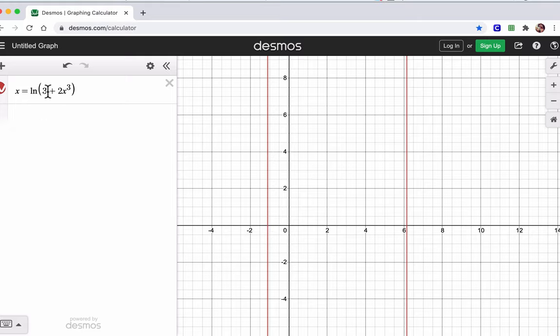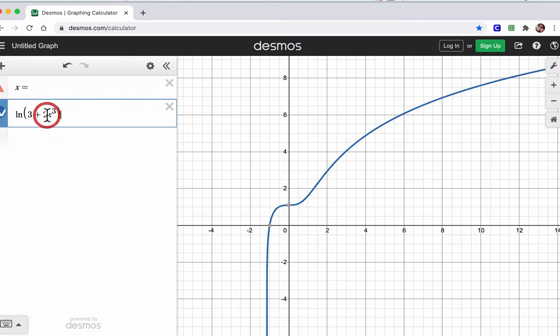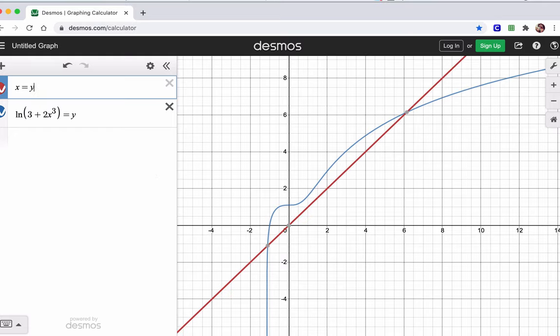But in order to get something you can analyze, you want to graph both sides of the equation as separate functions. Isn't that a cool log function? I love that. It's like a cubic log. And this equals y. And you can see they meet in different spots here and here.